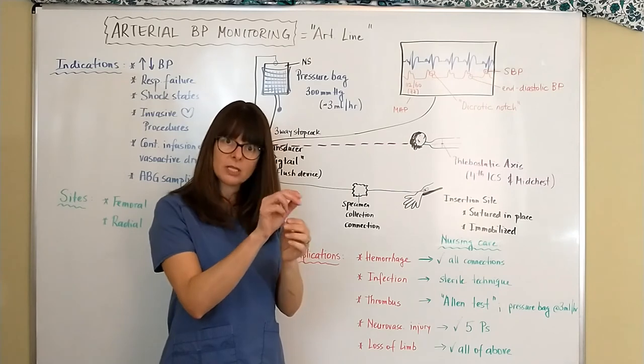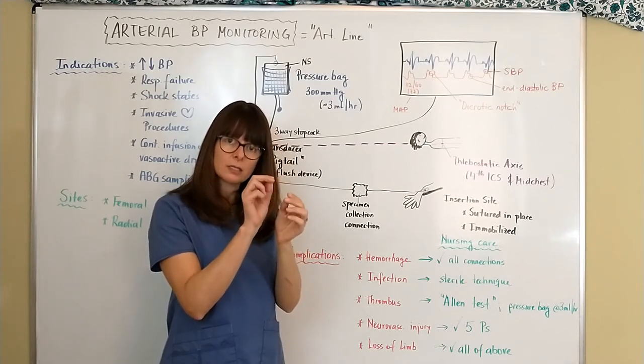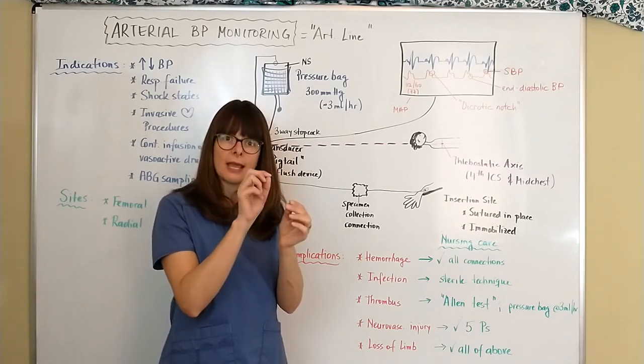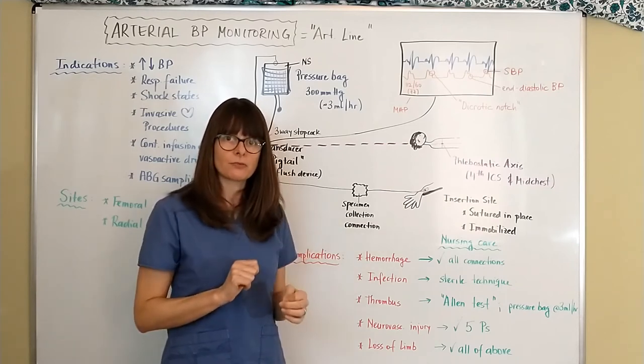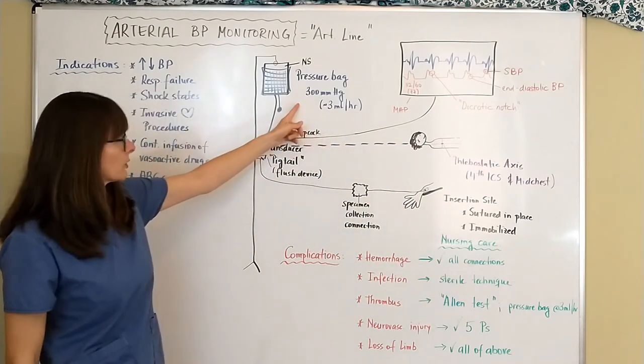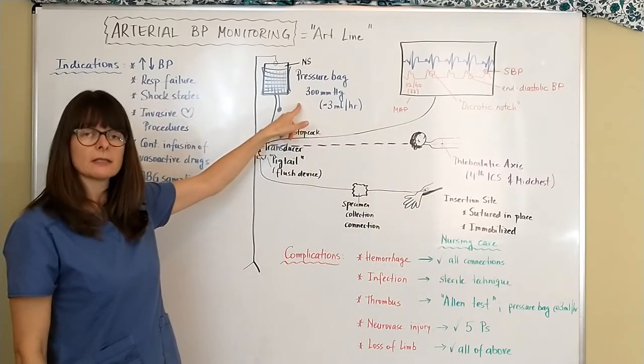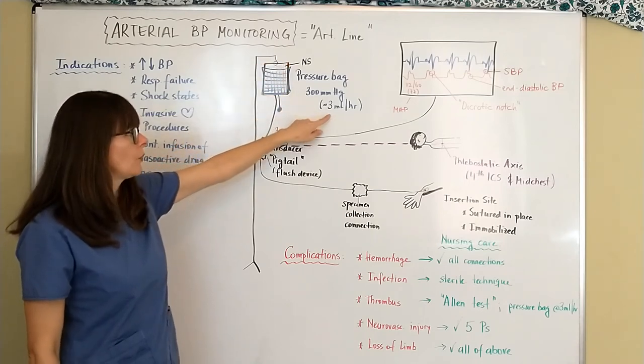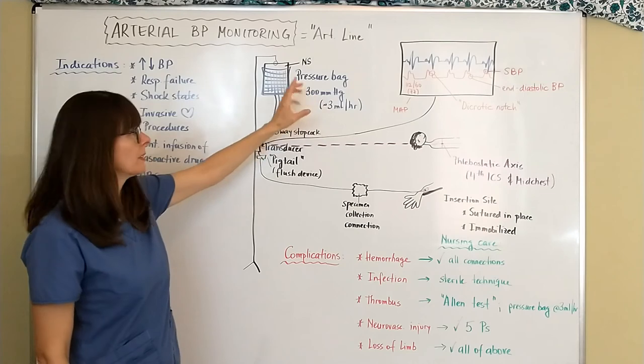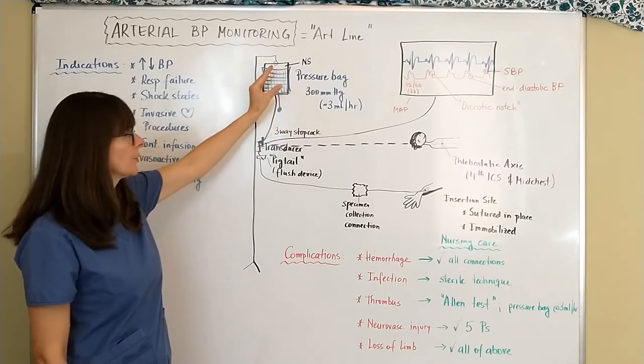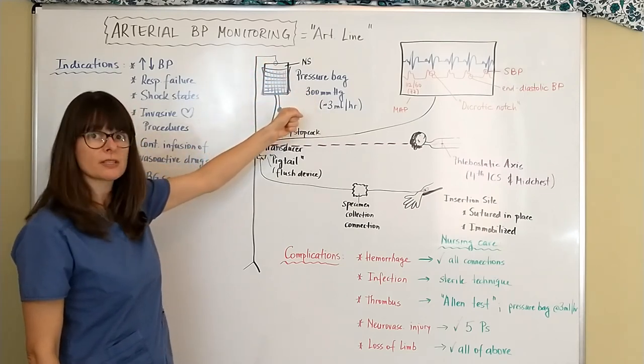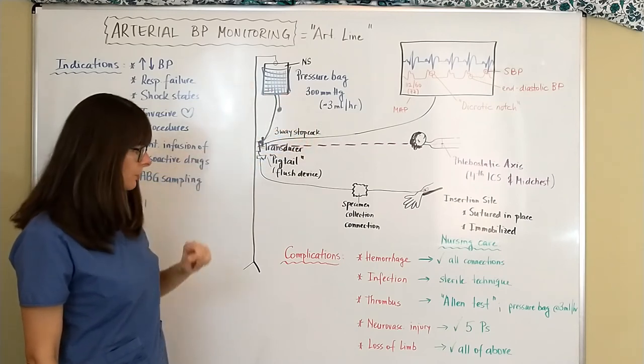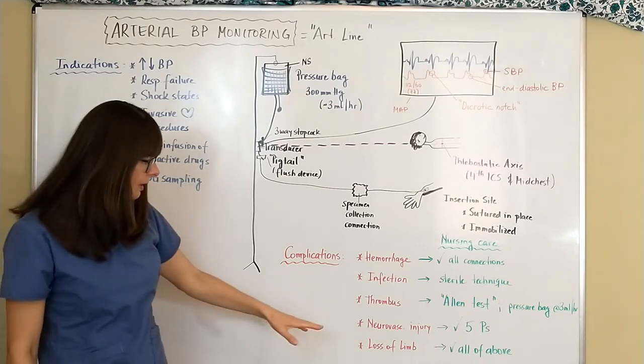Because otherwise what happens is the body recognizes this arterial line as being foreign and it kind of wants to clot it off. But if we continuously provide a little small amount of normal saline it'll keep the line patent and it'll prevent the thrombus from forming. So it's very important for us to check to make sure that this pressure bag is still at 300 millimeters of mercury because eventually the normal saline, although it's a very low rate, the bag will get lower and lower in volume and then we might have to increase the pressure from that pressure bag to provide the 300 millimeters of mercury.